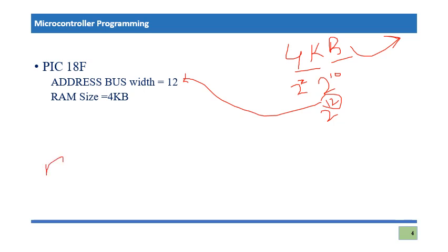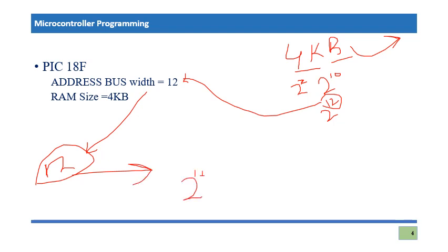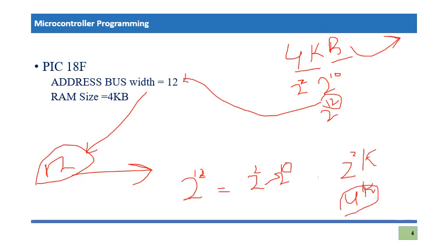We can also go the other way: if we know the address bus is 12 bits, we raise 2 to the power of 12. That gives us 2 power 10 multiplied by 2 power 2, which equals 4K. Since each slot holds one byte, the total memory size is 4 kilobytes, as seen here.